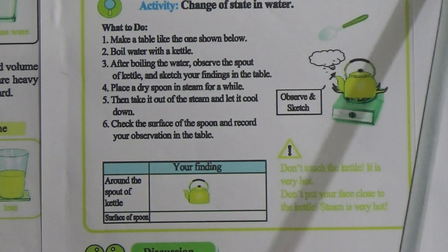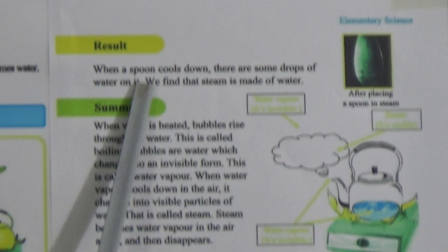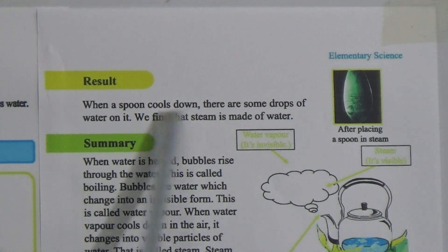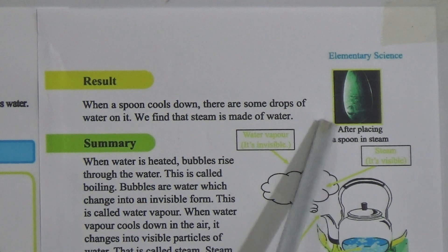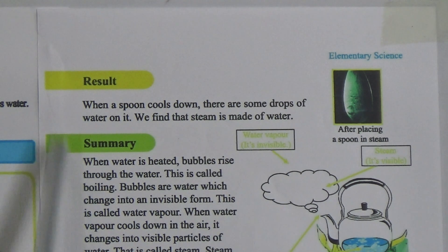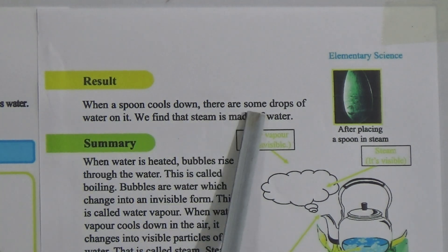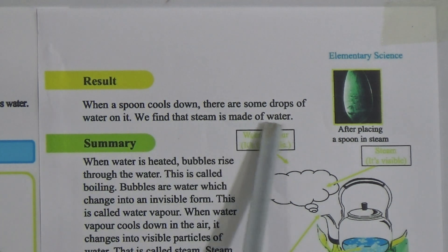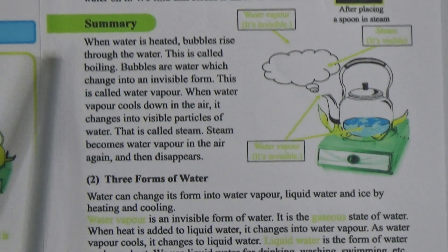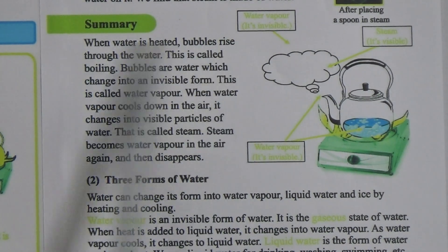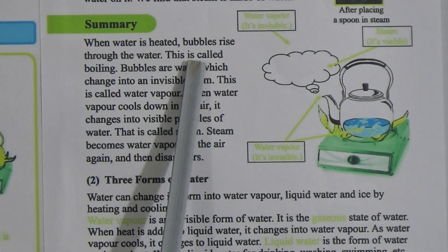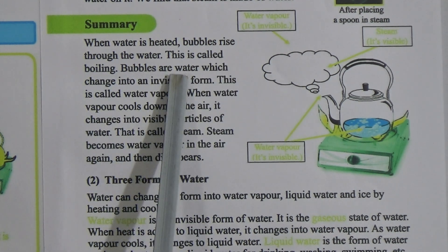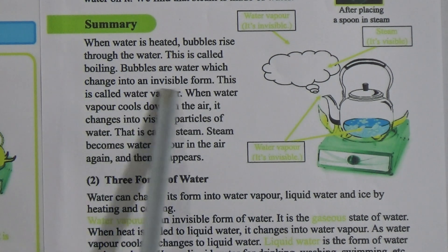When a spoon is placed on the kettle and then cooled down, we observe drops of water on the spoon — this shows that steam is made of water. When water is heated, bubbles rise through the water. This is called boiling. The bubbles are water vapor, which comes into an invisible form, and this is called water vapor.